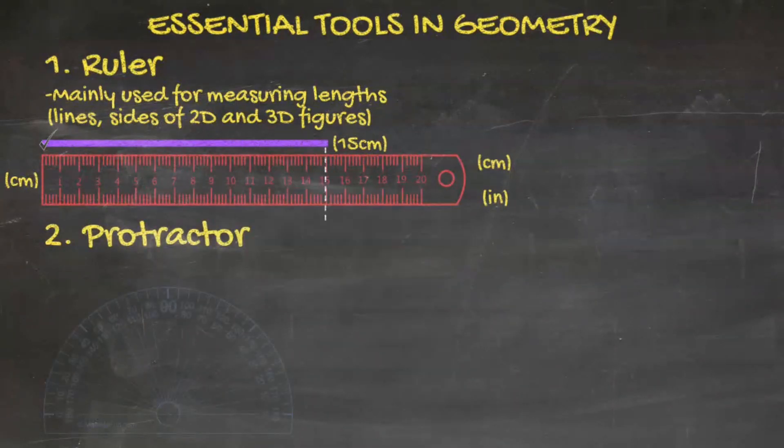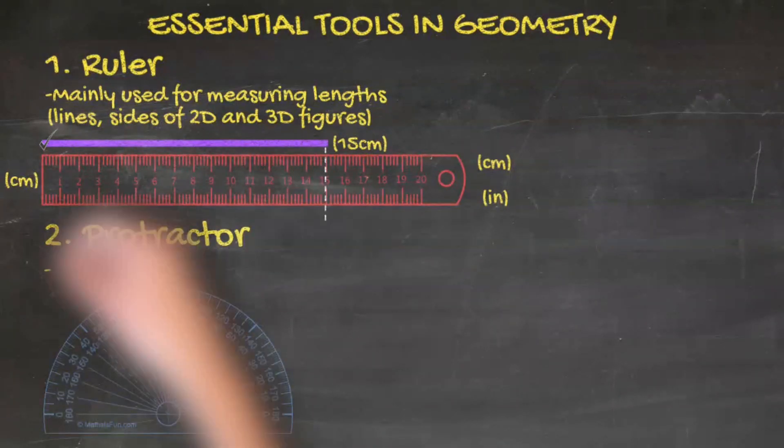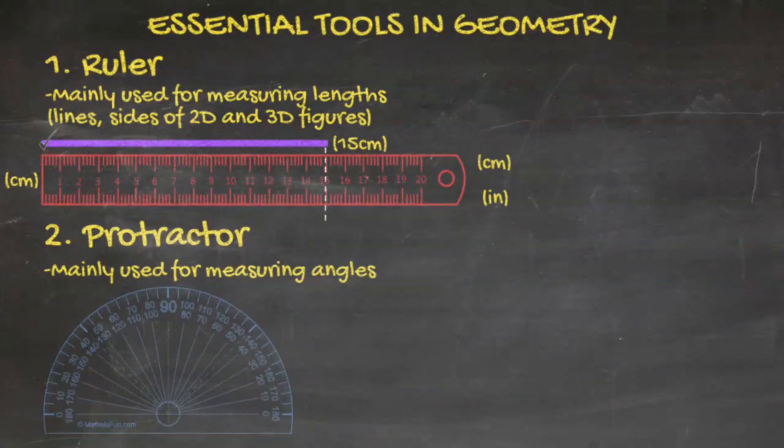Next, we have a protractor. Protractors are mainly used for measuring angles. For example, if we want to measure this angle, we need to make sure one of its rays is parallel to the base of the protractor, and then we just have to look at the measures that the other ray points to. Notice that the other ray points to two measures, 150 and 30.